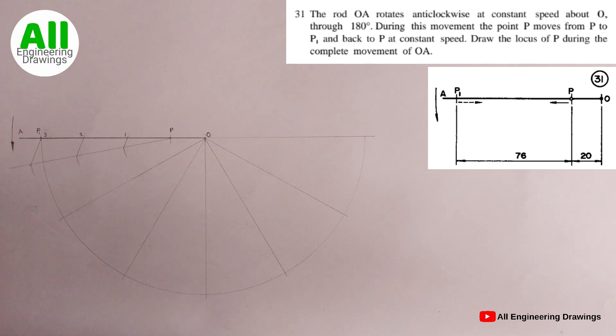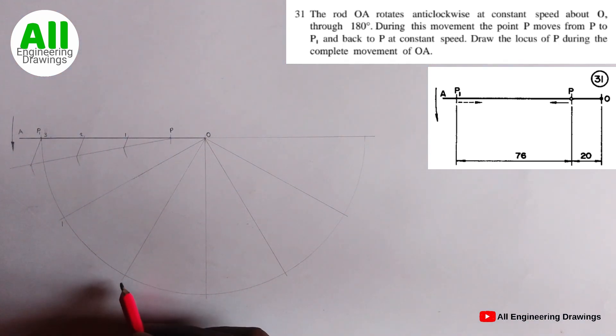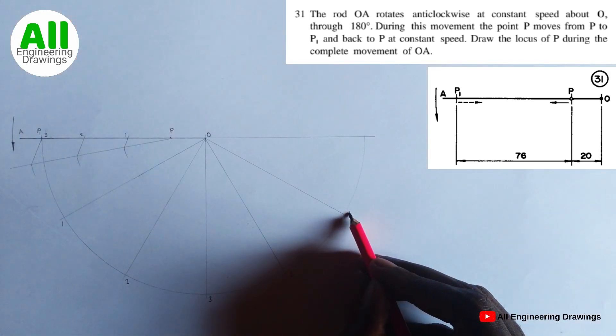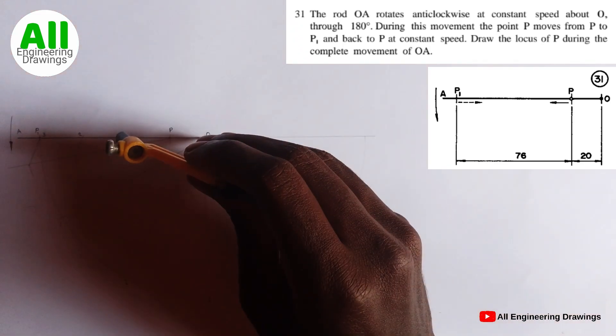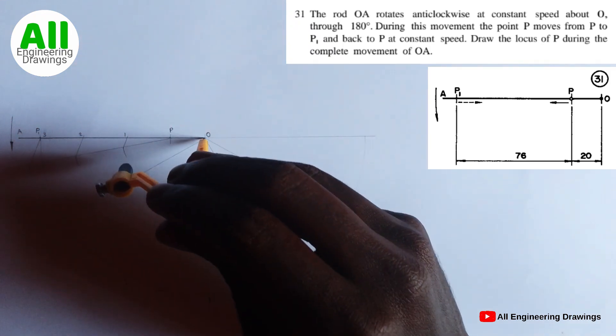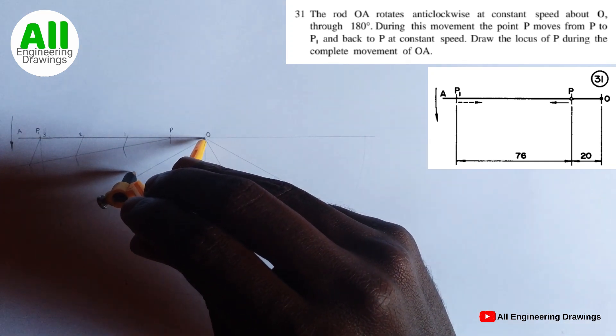You can number the points where lines of division intersect your semicircle this way. So you number these points here, you call this point 1, call this point 2, this point here 3, then this point 2, this point here 1. So after doing that, next you place your compass on point O, then adjust the compass to point 1, then cut arc on the line you labeled 1, the line of division of the semicircle you labeled 1.